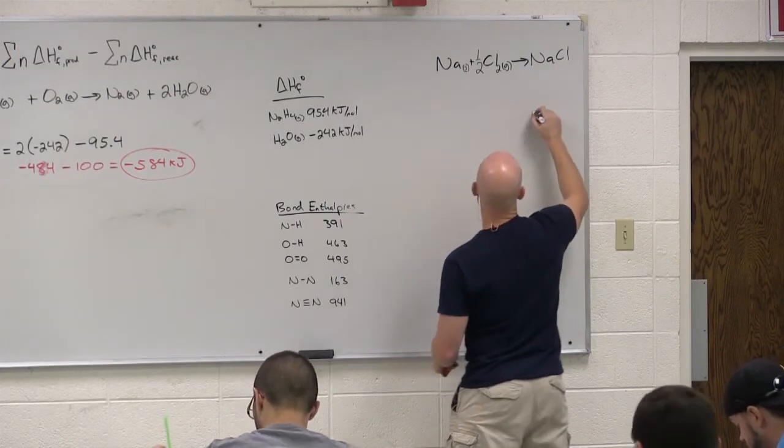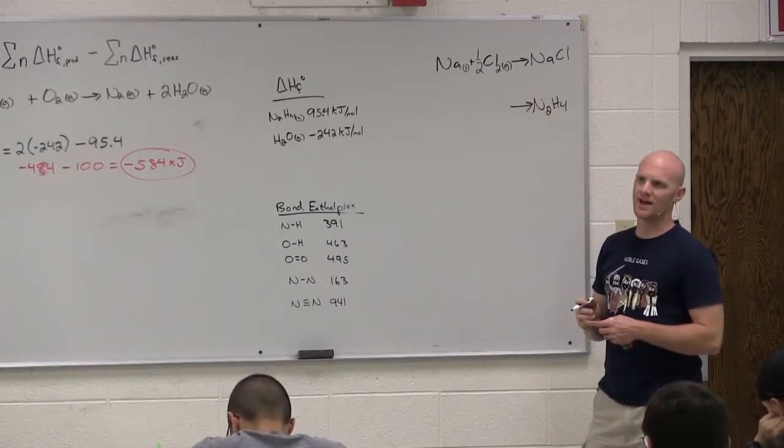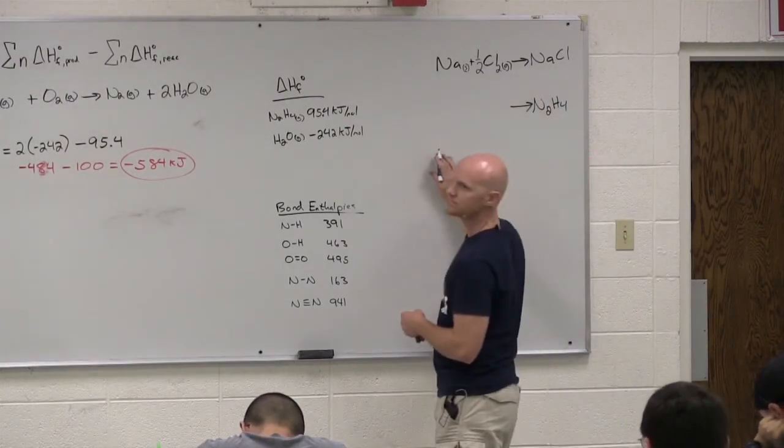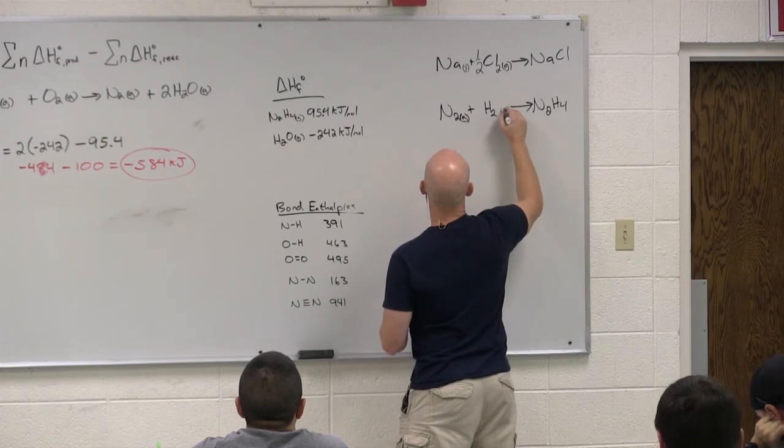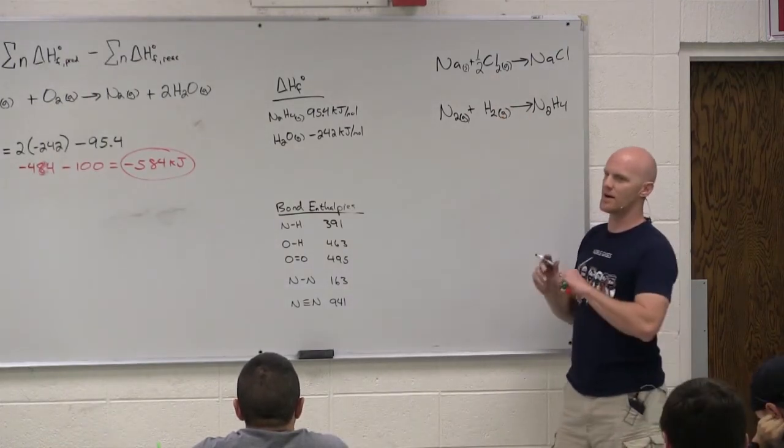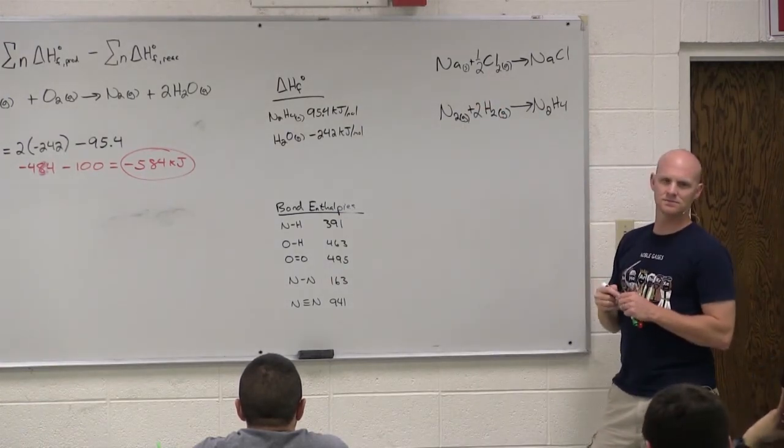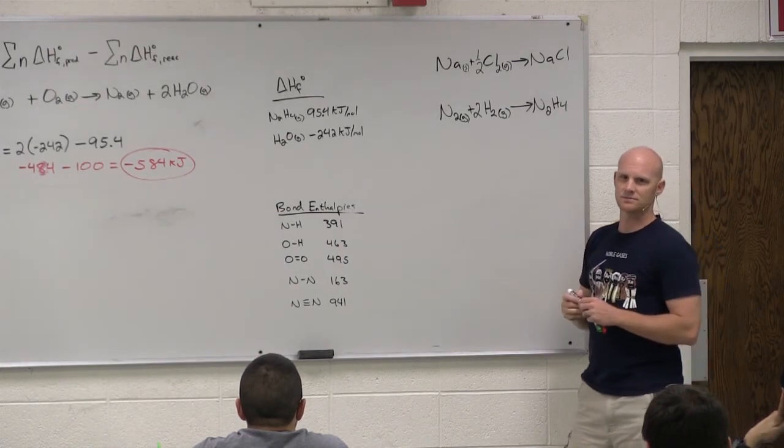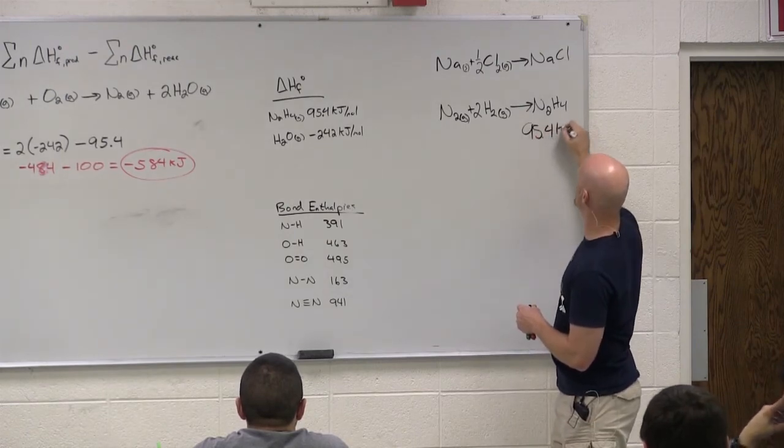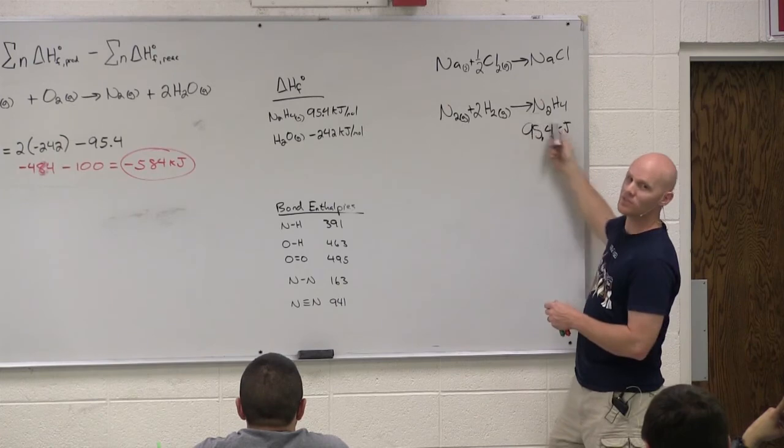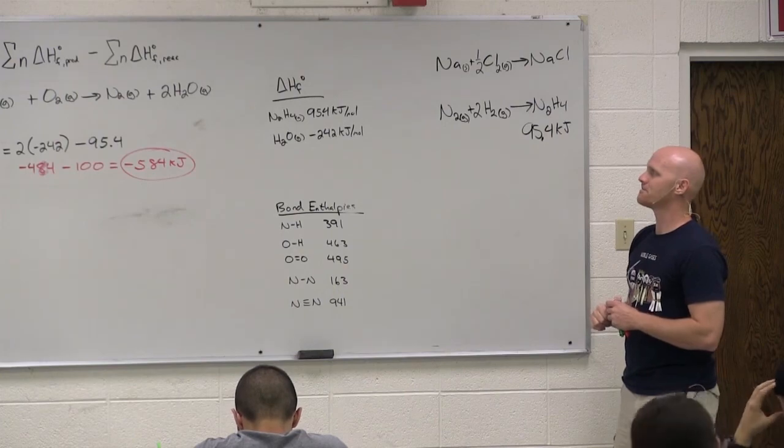Let's say I did the formation reaction for N2H4. What are my reactants? N2 and H2, there's the elements in their standard states. And how do I balance? Anybody by chance know the delta H for this reaction? Or you just looked right over here and said, oh, there it is. That's where that 95.4 kilojoules per mole comes from. It's for this reaction right here.